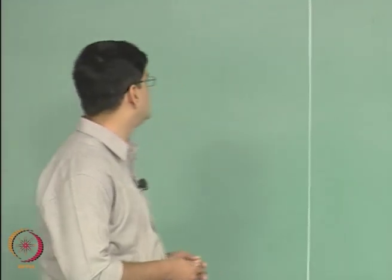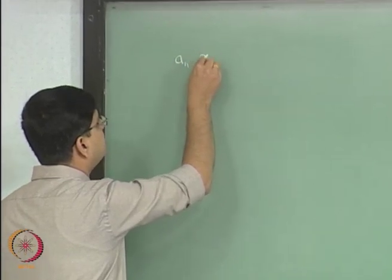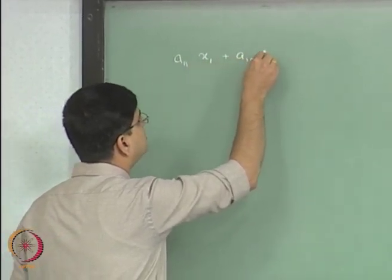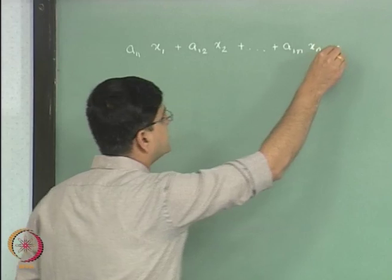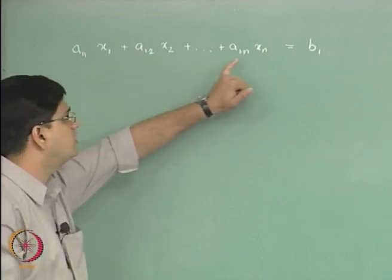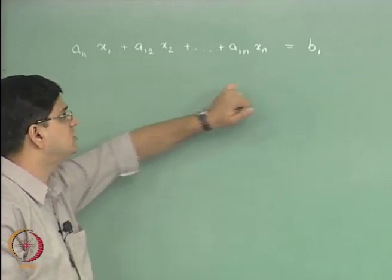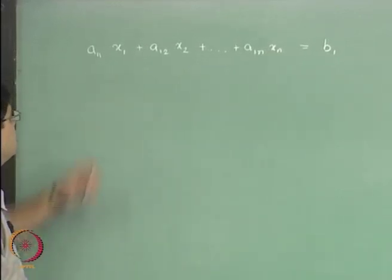What we left out in the previous lecture is what happens when we go from a 2 by 2 system to an n dimensional system, where we have n equations and n unknowns. A typical equation will be written in the form: a₁₁ multiplied by x₁ plus a₁₂ multiplied by x₂ and so on up to a₁ₙ multiplied by xₙ equal to some right hand side term b₁, where a₁₁, a₁₂ up to a₁ₙ are the coefficients and x₁, x₂ up to xₙ are the variables we are interested in solving.